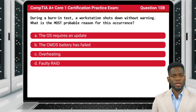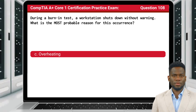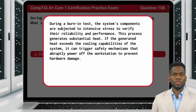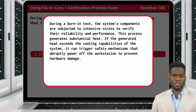Question 108: During a burn-in test, a workstation shuts down without warning. What is the most probable reason for this occurrence? The answer is C: Overheating. During a burn-in test, the system's components are subjected to intensive stress to verify their reliability and performance. This process generates substantial heat. If the generated heat exceeds the cooling capabilities of the system, it can trigger safety mechanisms that abruptly power off the workstation to prevent hardware damage.